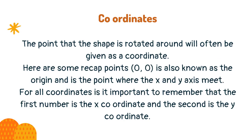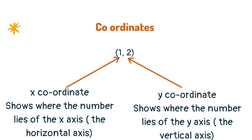Here are some recap points. (0, 0) is also known as the origin and is the point where the x and y axes meet. For all coordinates, it is important to remember that the first number is the x coordinate and the second is the y coordinate. The x coordinate shows where the number lies on the x axis (the horizontal axis). The y coordinate shows where the number lies on the y axis (the vertical axis).